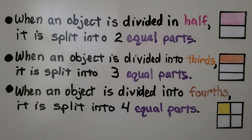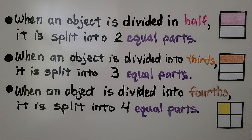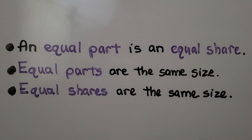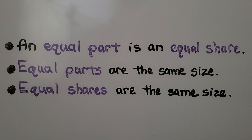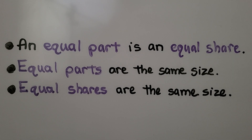When an object is divided in half, it is split into two equal parts. When an object is divided into thirds, it is split into three equal parts. And when an object is divided into fourths, it is split into four equal parts. An equal part is an equal share, and equal parts are the same size.